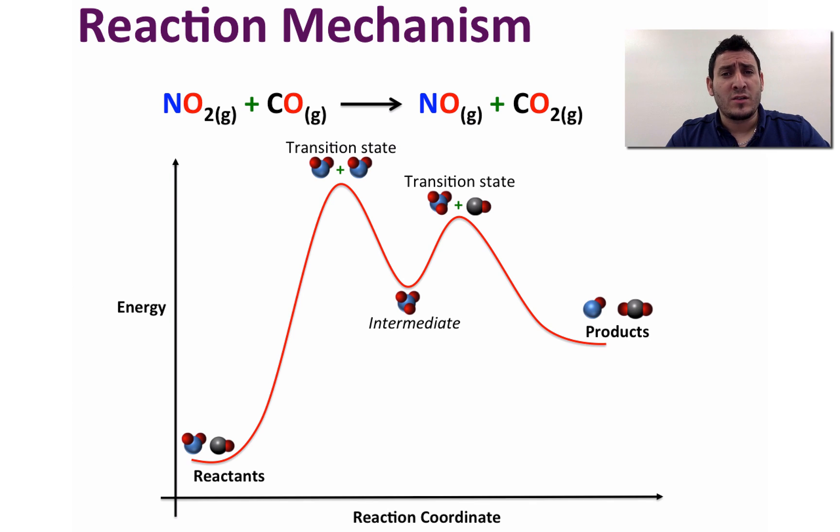This energy diagram clearly shows the two steps of the mechanism where the first step is the slowest step since it has the highest activation energy, and that this reaction is endothermic since the delta E is positive.